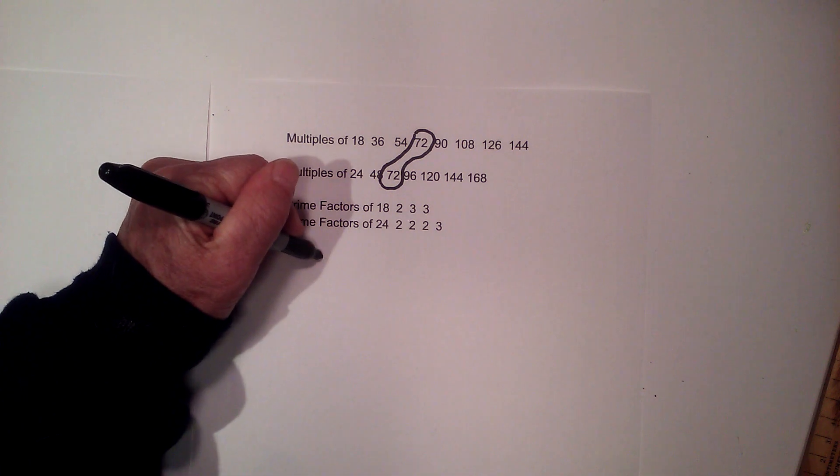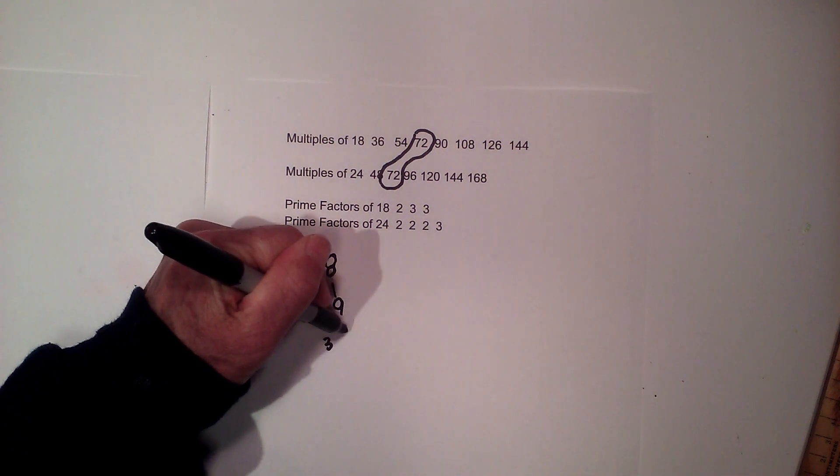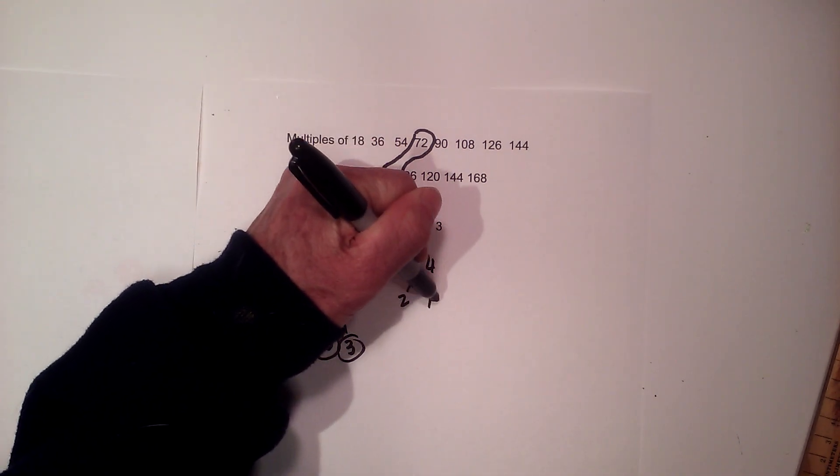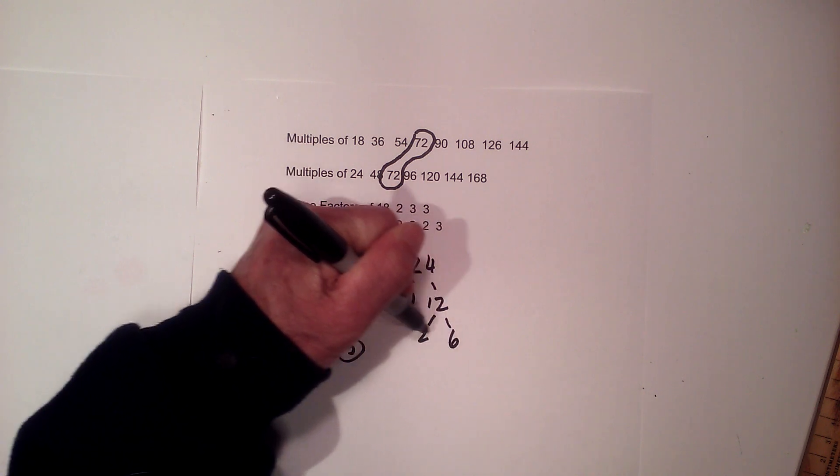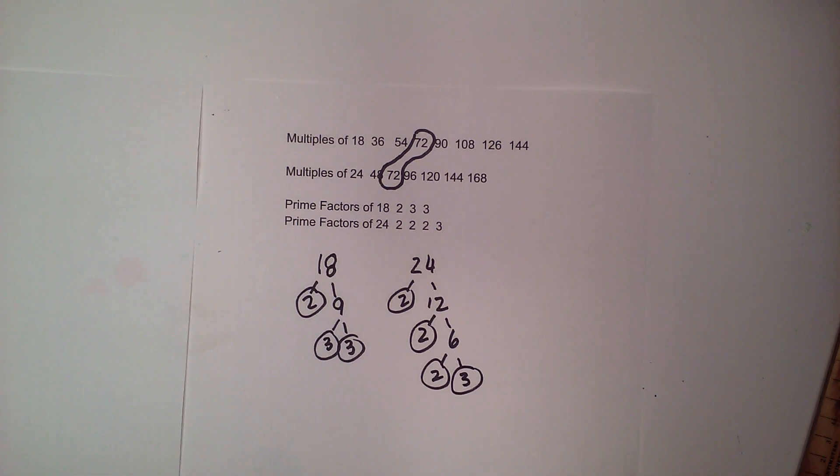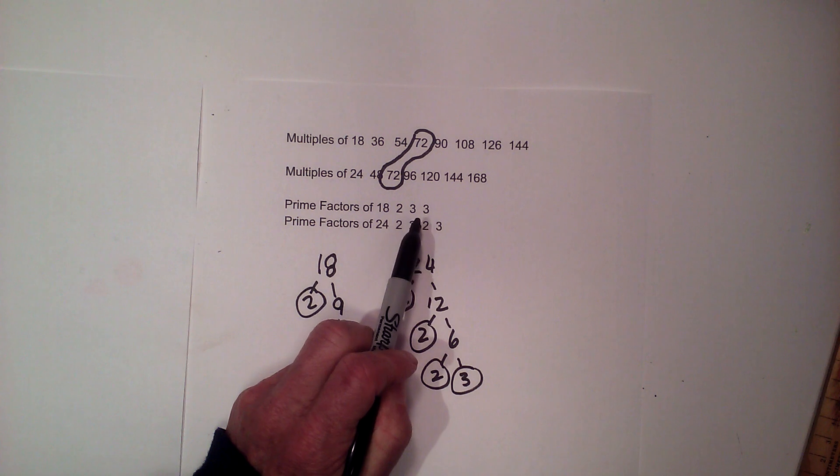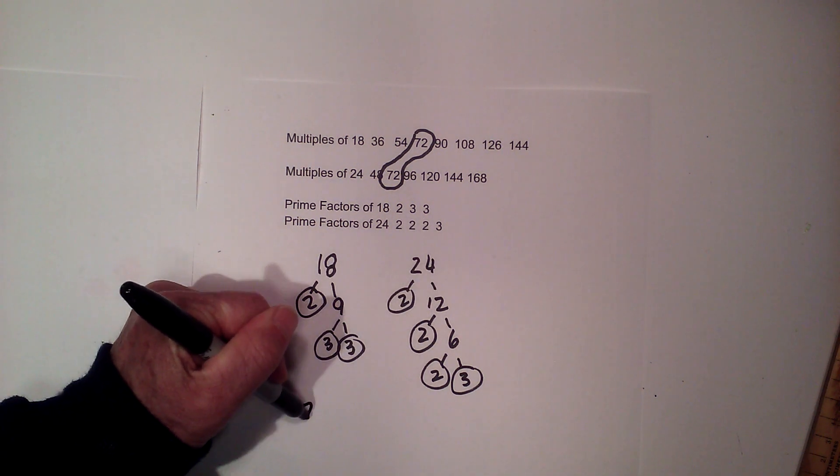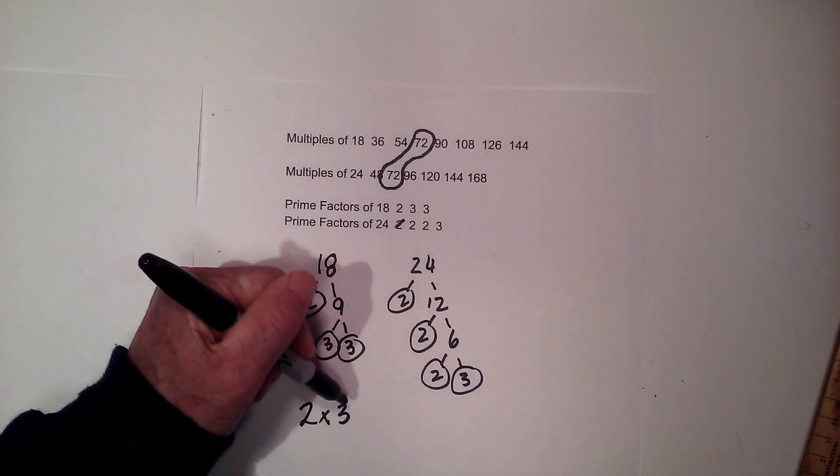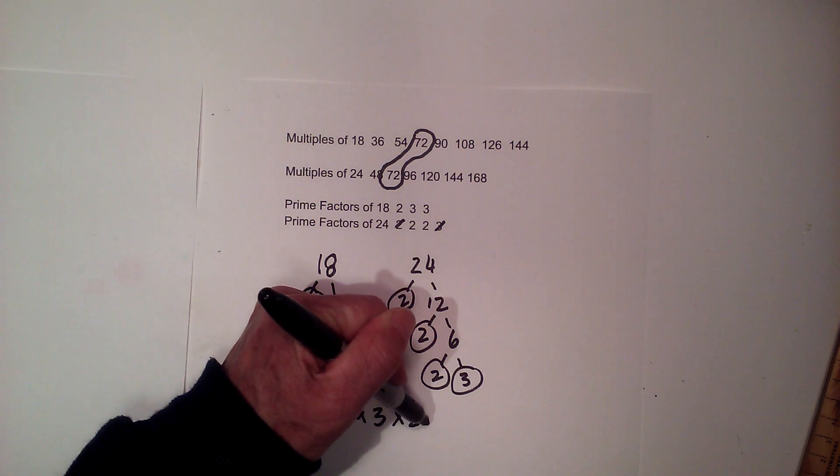Now, let's look at the prime factors. The prime factors: finding the prime factors of eighteen, I find it very easy. I've got two times nine, then three times three. Circle both of those. And then twenty-four: two times twelve, circle the two, two times six, circle the two, two times three. And I find that pretty easy for this particular one. So I've written down the prime numbers: two, three, and three for eighteen, two times two times two times three for twenty-four. And then I just multiply them together. And remember the one rule: two times three, I cross off one two, and I'm going to cross off one three, times three, times two, times two.